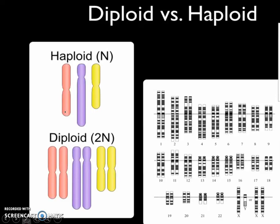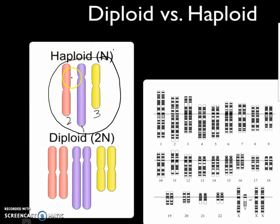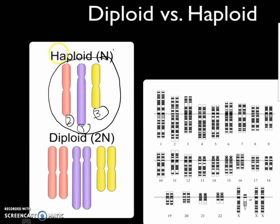So mitosis is really important because the DNA in the nucleus is passed on to the daughter cell through mitosis. Before we look at the stages of mitosis, we need to know two terms: diploid and haploid. DNA is organized in chromosomes, named from longest to shortest — chromosome 1, chromosome 2, chromosome 3. A cell with one copy of each chromosome is called haploid, represented by N. Here, N equals 3.